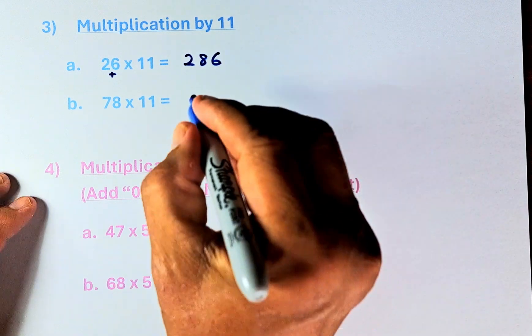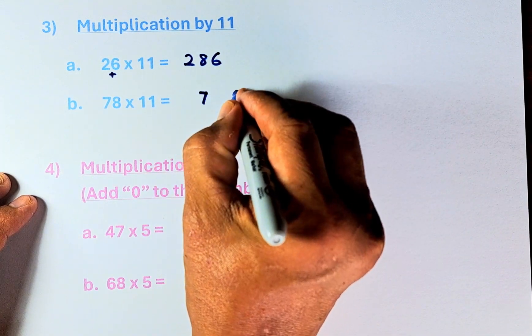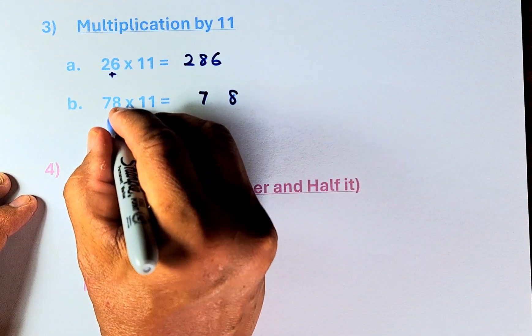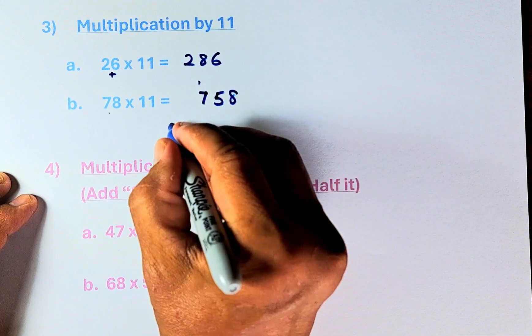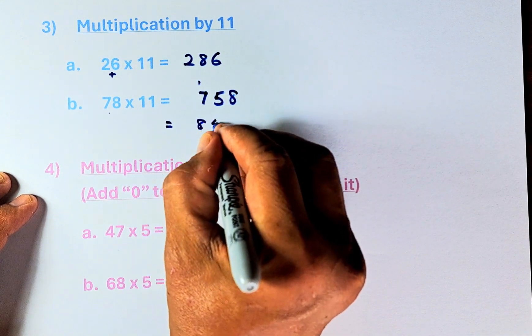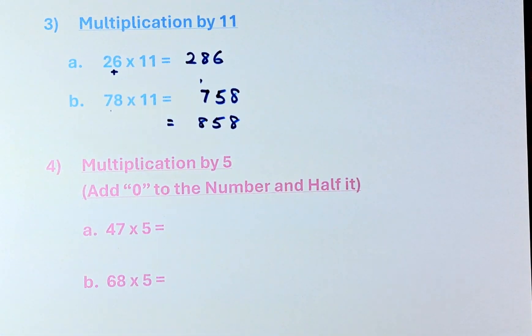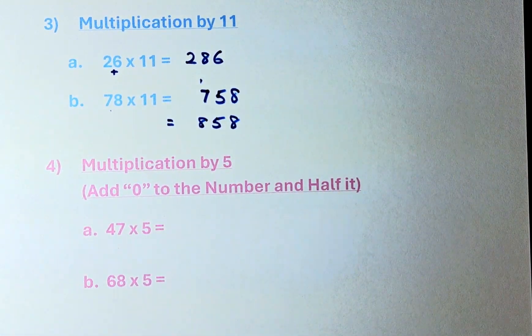Similarly, 78 times 11, 7 and 8 remain. This time 7 plus 8 is 15, so you put 5, carry up 1. So the answer is going to be 858. So that is how you multiply by 11.